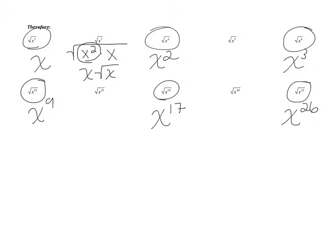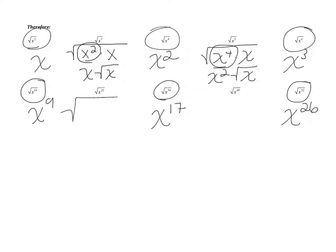We can do the same thing with the square root of x to the fifth. We break this into x to the fourth times x. X to the fourth is our perfect square — its square root is x squared. So we pull out x squared, and what's left on the inside is the square root of x. The answer is x squared square root of x. For the square root of x to the 25th, take one away to get an even number — x to the 24th times x. Half of 24 is 12, so we get x to the 12th square root of x. For x to the 49th, we break it into x to the 48th times x, and the square root of x to the 48th is x to the 24th square root of x.